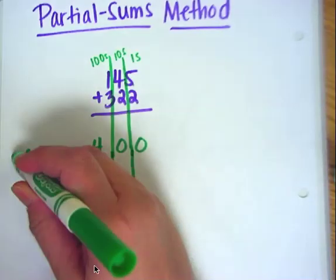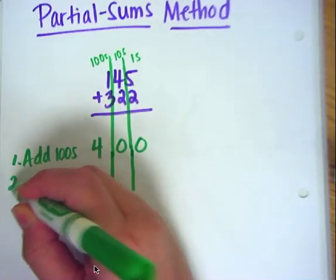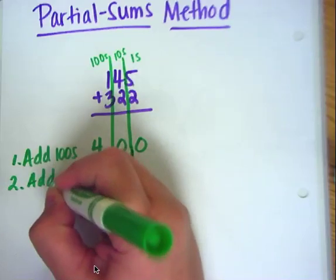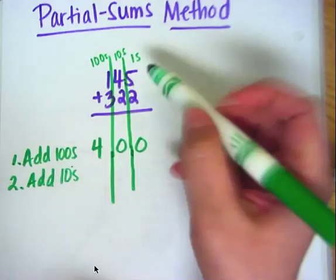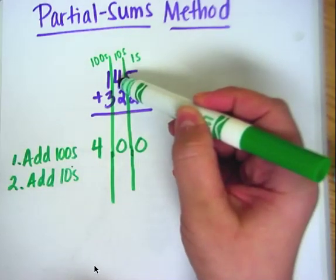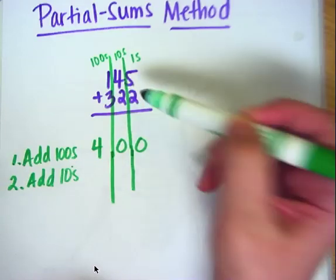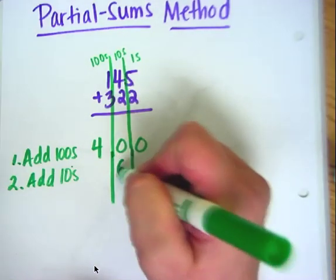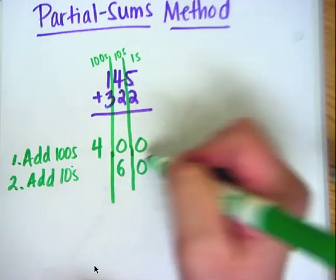The next step, I'll put a 1 here so we're organized. The next step is we're going to add the tens place. So tens place, we have a 4, which stands for 40, and a 2, which stands for 20. So 40 plus 20 is 60. I'm going to put a 6 there and a 0.